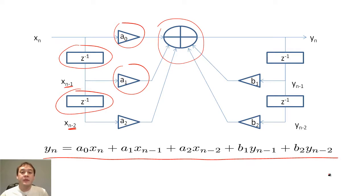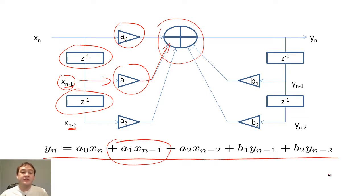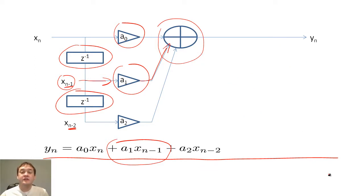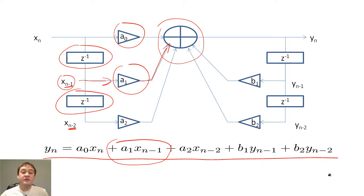For example, we multiply X(N-1) by A_1 and add it to our final Y(N). We will discuss difference equations in greater depth later, so this is just an introduction. When there is no feedback loop, we say that the filter is non-recursive and has finite impulse response. When there is a feedback loop, we say that the filter is recursive or has infinite impulse response.